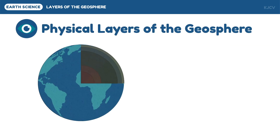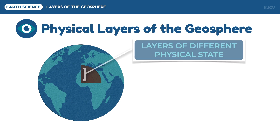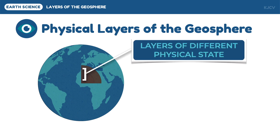Let us now discuss the physical layers of the geosphere. It is composed of five layers based on the strength and physical state. The two innermost physical layers are the sub-layers of the earth's core — these are the layers with different physical states.